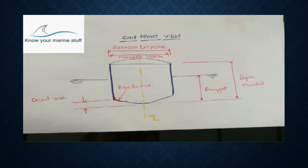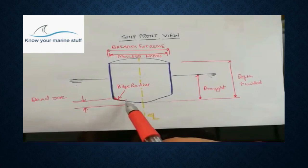Now another thing is bilge radius. The ship cross section at the lower corner is rounded off, and this is called the bilge part. This section is known as bilge part, and it is curved. This radius is known as bilge radius.